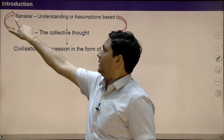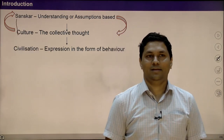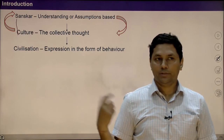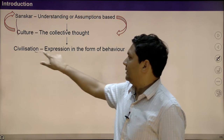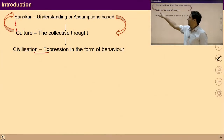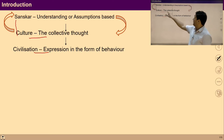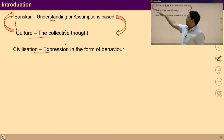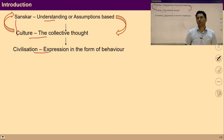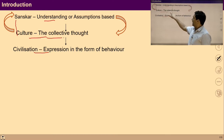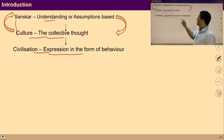Sanskar and culture are basically interrelated to each other. At the core of civilization is culture, and each culture is what has been understood or assumed about the reality — that is sanskar. If we are talking of an individual human being, then we are talking about sanskar. When we are talking about combined or collective living, collective thoughts are culture. And when these thoughts are expressed in behavior and work, it is basically a civilization.